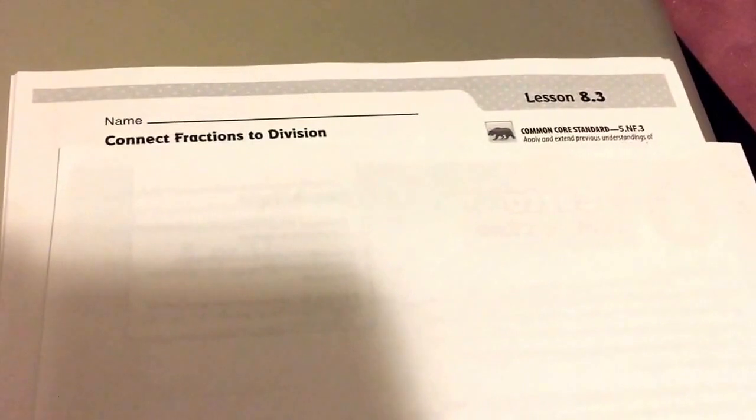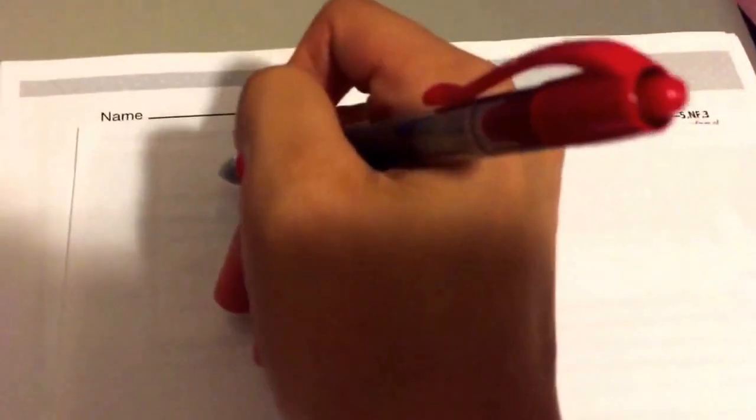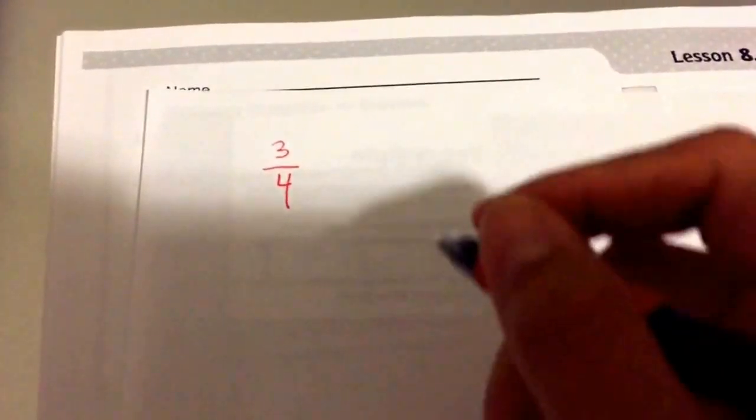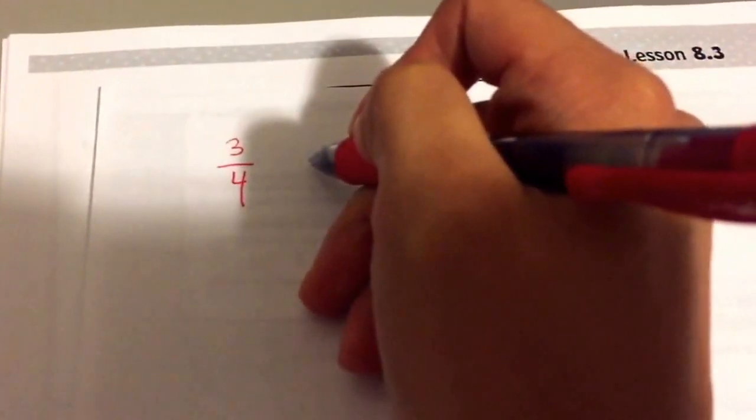Before we begin this lesson, I'm going to show you some really neat things and concepts about fractions and division. Let's take the number 3 fourths. 3 is our numerator, 4 is the denominator. When we think of 3 fourths, we know that this number is going to be less than 1. When you're thinking of 3 over 4, you can think of it as a division problem.